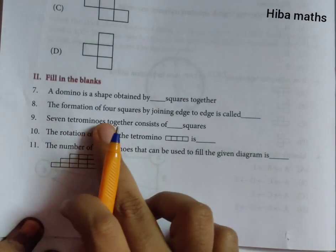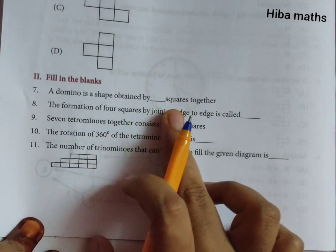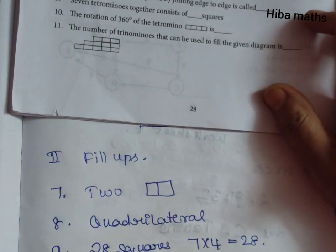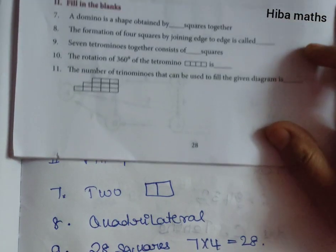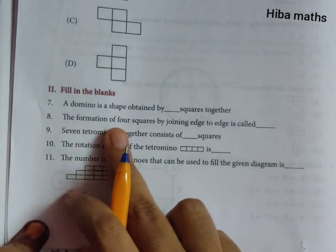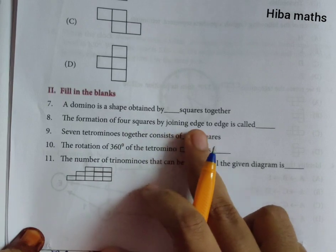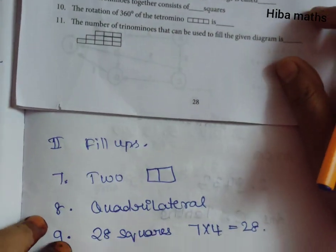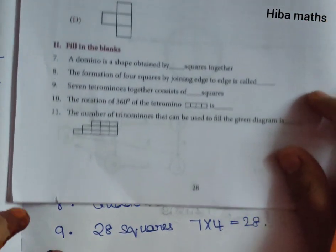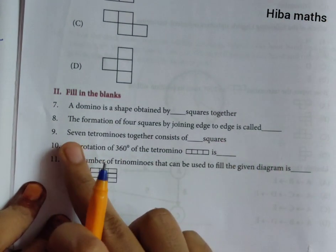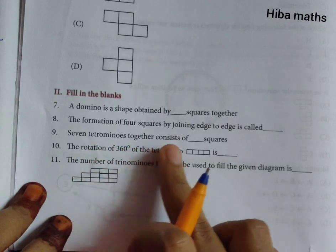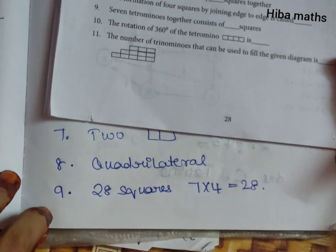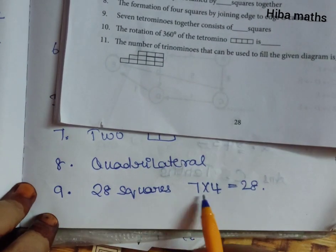Fill in the blanks. A domino is a shape obtained by dash squares together. Domino means 2, so 2 squares. This is the shape. Formation of 4 squares by joining edges. The 7 tetromino together consists of dash squares. So 4 tetromino, total 7, so 28 squares.